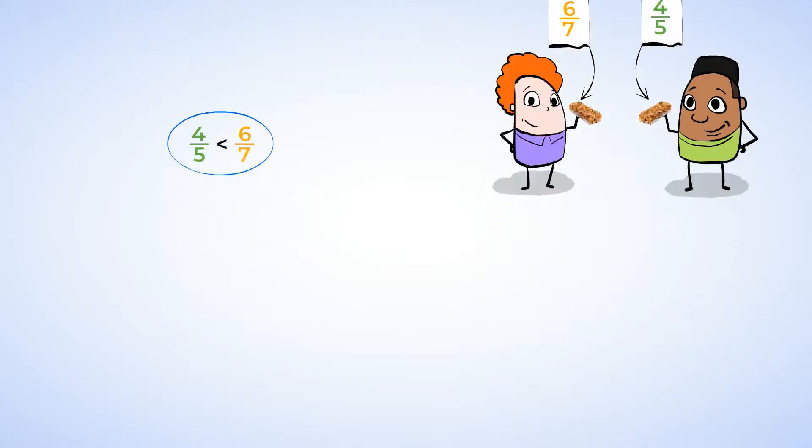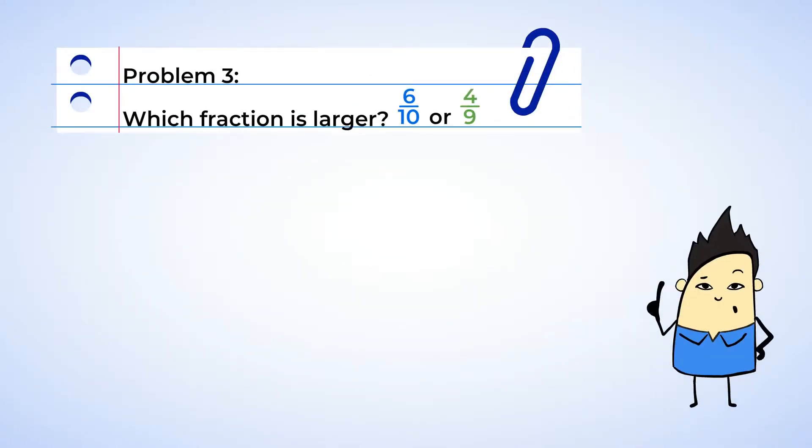Just one more problem. Which fraction is larger? Six-tenths or four-ninths? I think we should use a strategy that involves some mental math. We can use the denominators of the fractions to compare the fractions to one-half. Looking at six-tenths, we know that the denominator is ten. And half of ten is five. So five-tenths is equivalent to one-half. And this means that six-tenths is greater than one-half.